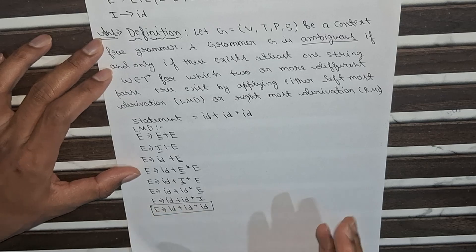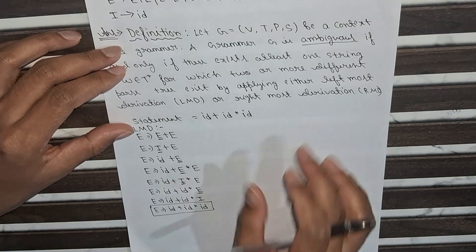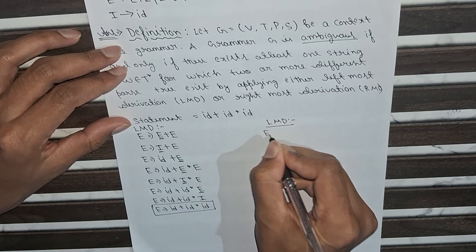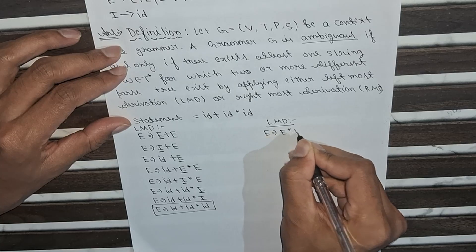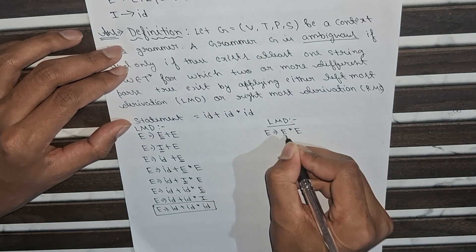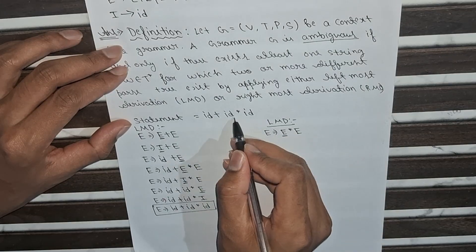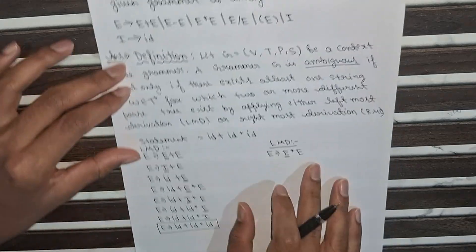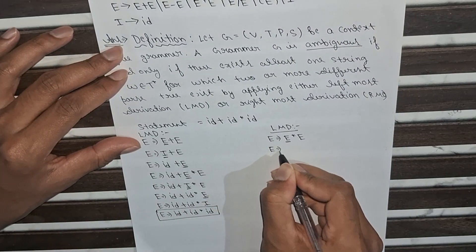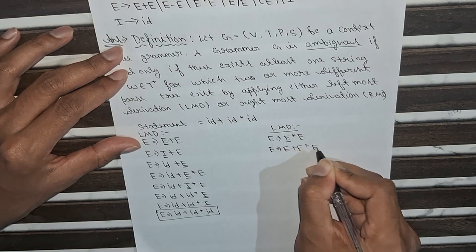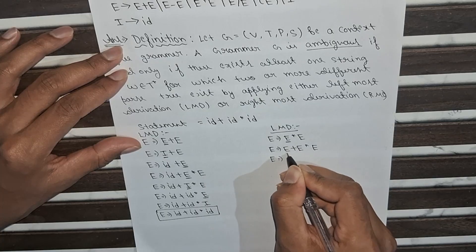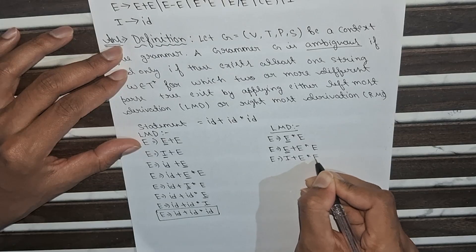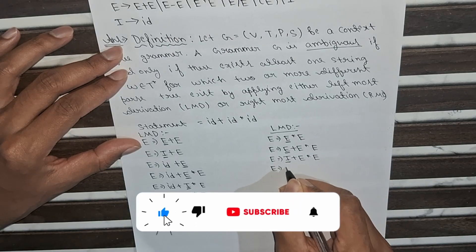Now we take a second production using LMD to derive the same statement. This time we start with E → E * E. To get ID + ID on the left side, we apply E → E + E, giving E + E * E. Replacing the leftmost E with I → ID, we get ID + E * E.